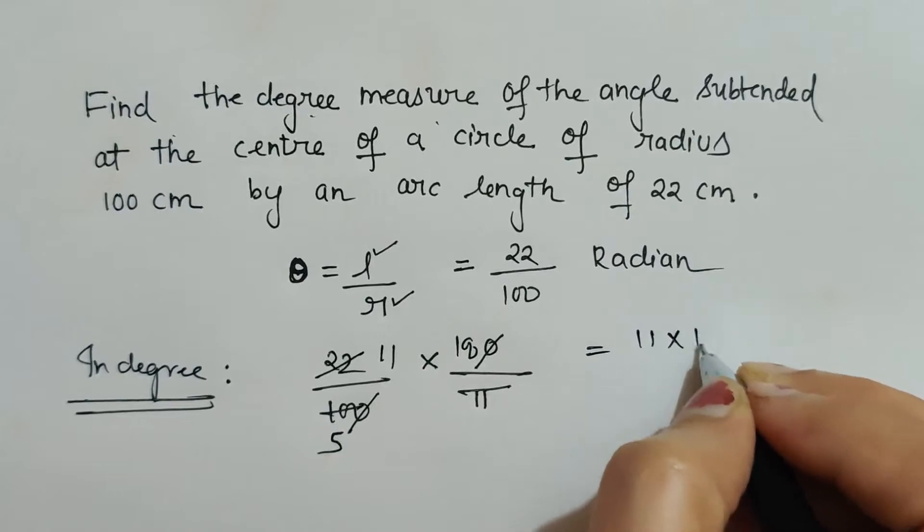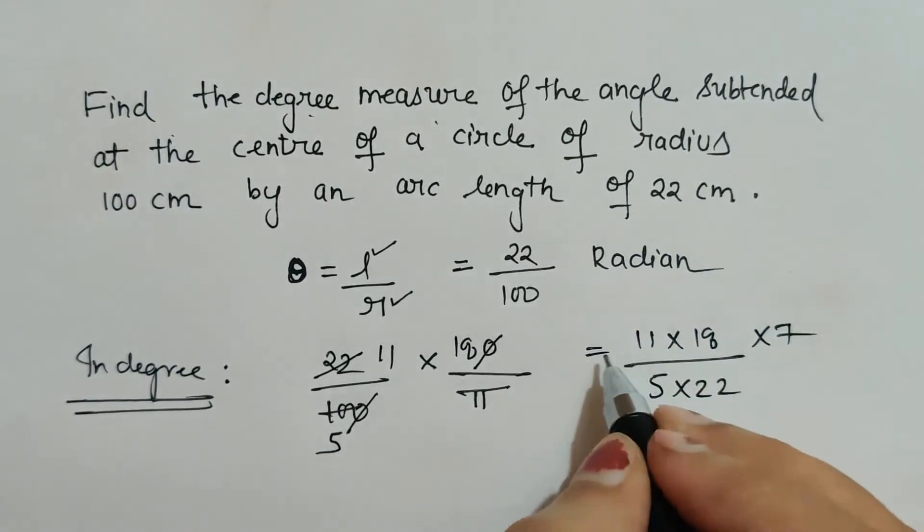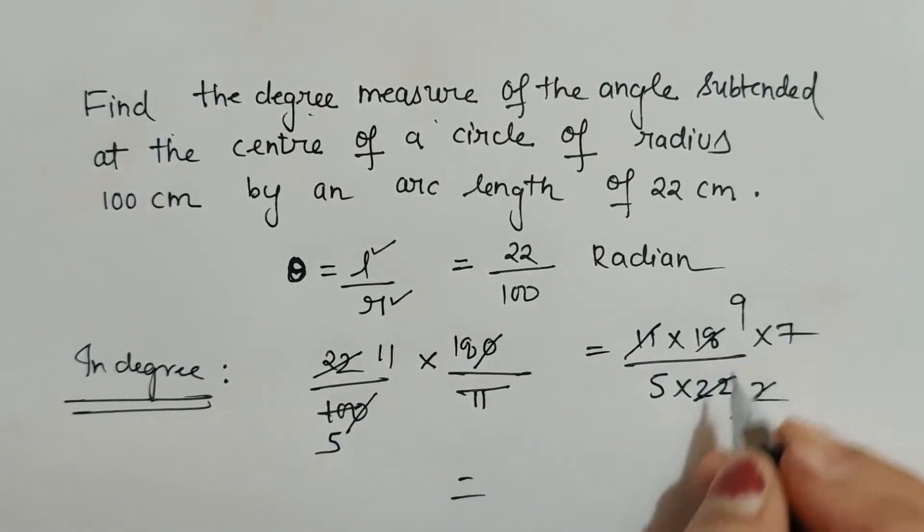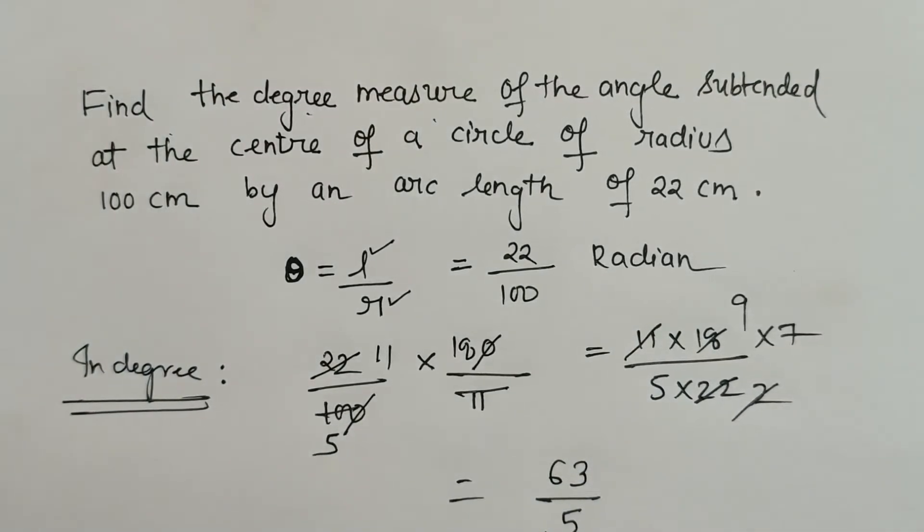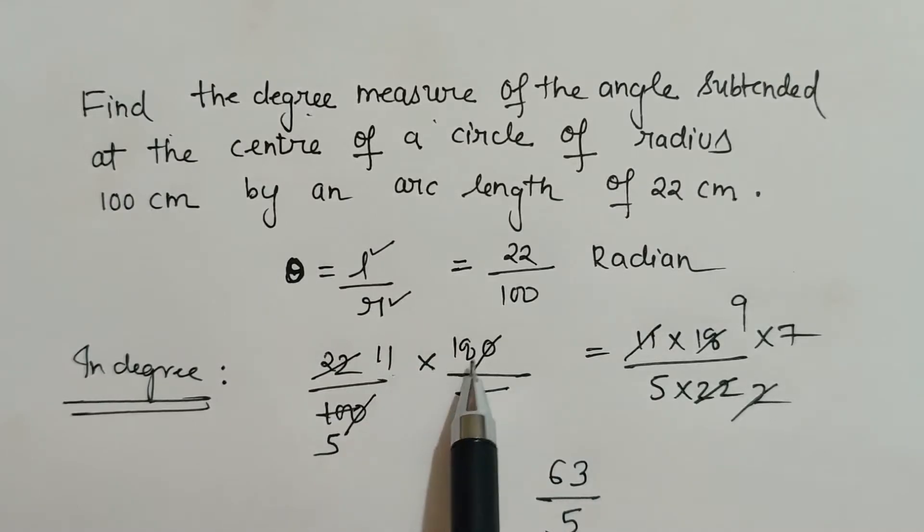This gives 11, 2s are 22, 2 9s are 18, and this is 63 upon 5. As we are converting this radian angle to degree, that's why we are multiplying it with 180 by pi.